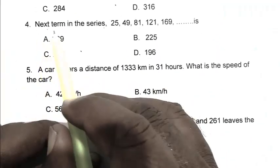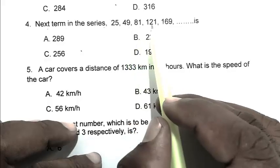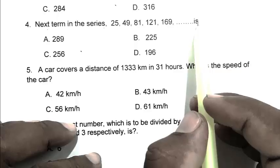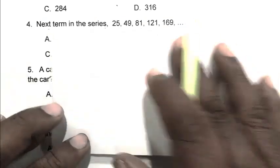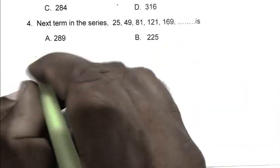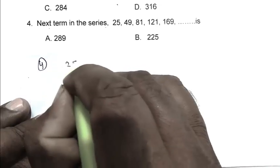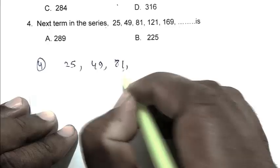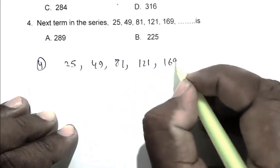Question number four: Next term in the series 25, 49, 81, 121, 169. We first write the series: 25, 49, 81, 121, 169.